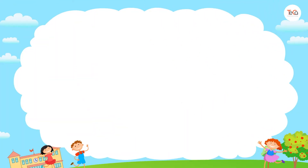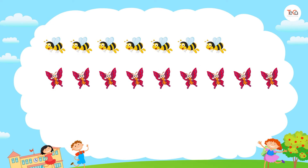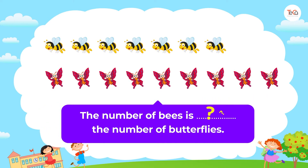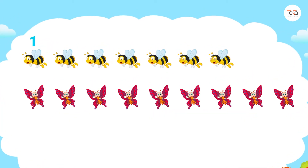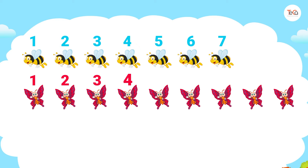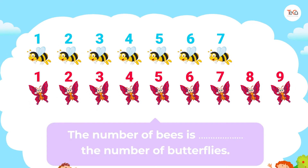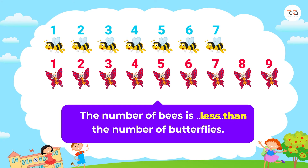Now we have a number of bees and butterflies. The number of bees is ___ the number of butterflies. Do you have your answer yet? First let's count the bees: one, two, three, four, five, six, seven. Now let's count the butterflies: one, two, three, four, five, six, seven, eight, nine. So the number of bees is less than the number of butterflies.